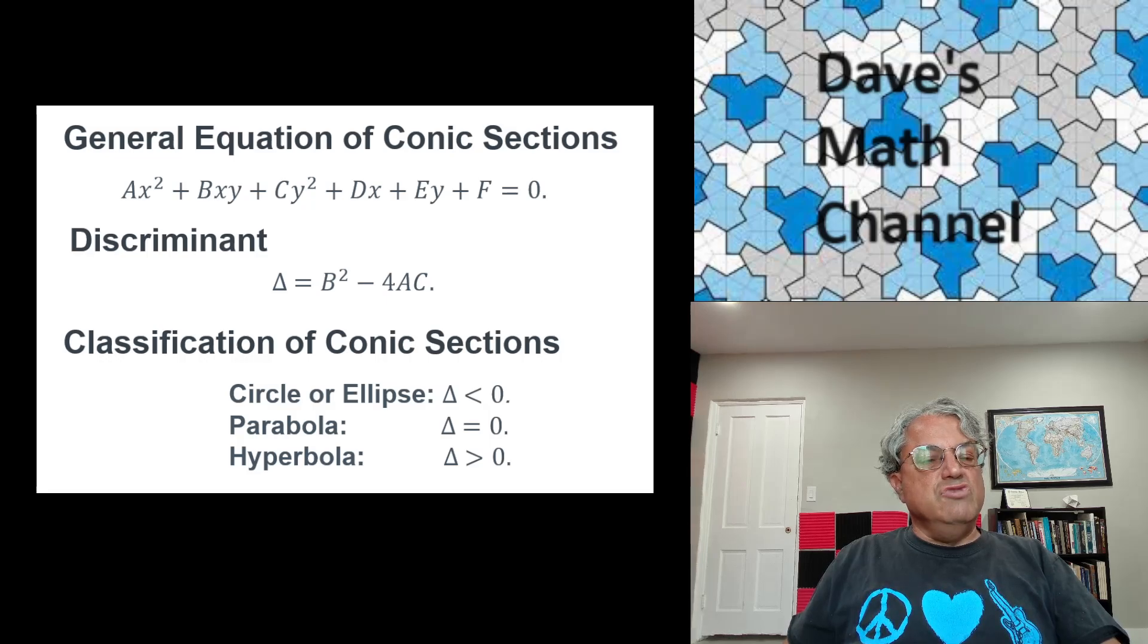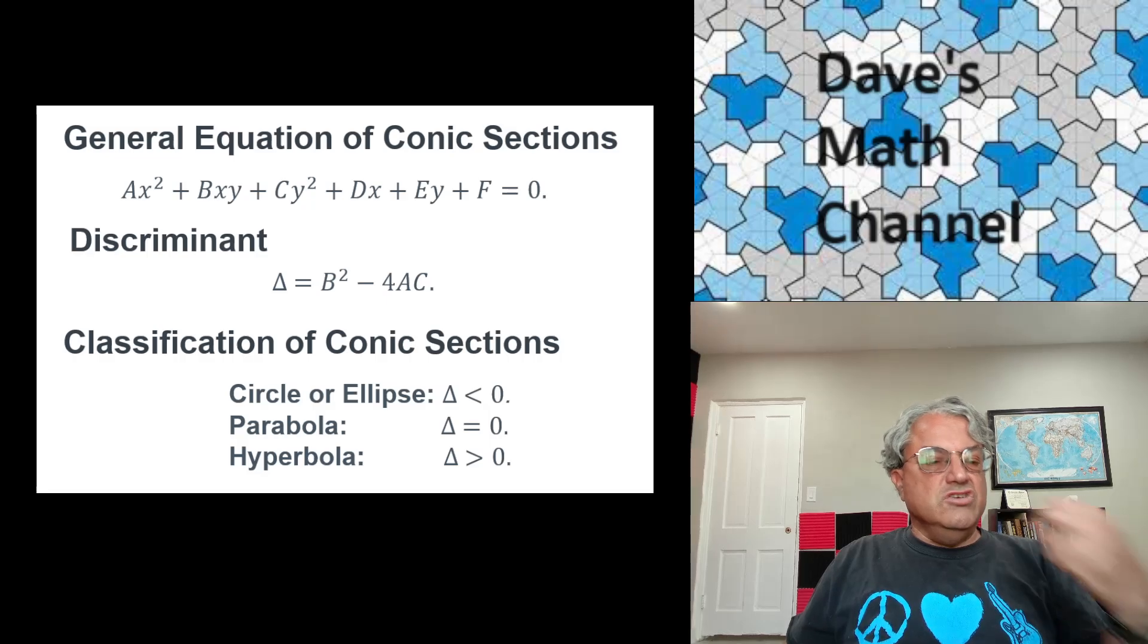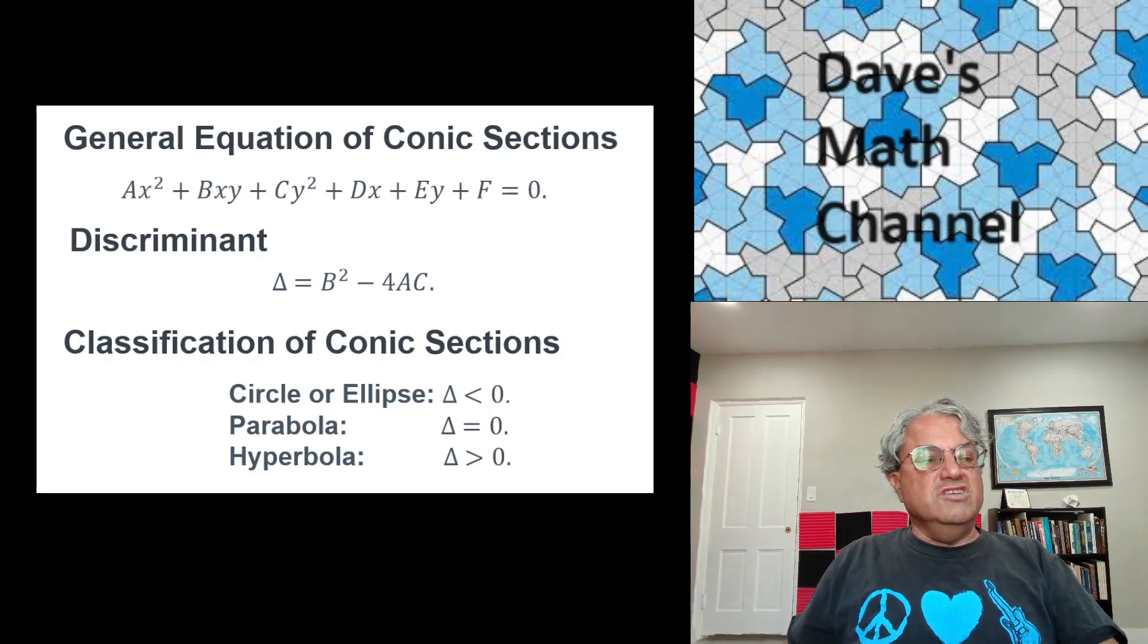And the reason the discriminant is nice as far as conic sections go is because depending on the sign of the discriminant, you get different types of conic sections. So in the case where the discriminant is negative, you get either a circle or an ellipse. If the discriminant is equal to zero, you get a parabola. And if the discriminant is greater than zero, you get a hyperbola. So that tells you what type of conic section you get from this general formula.